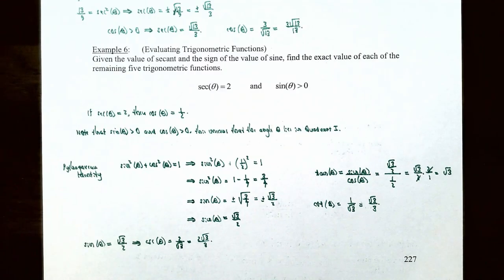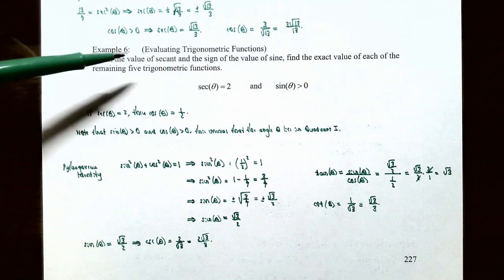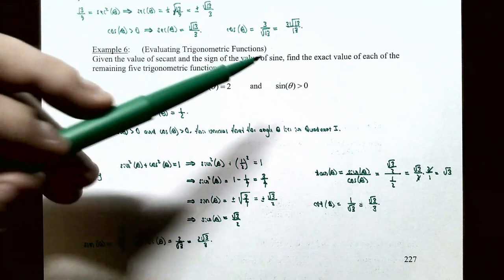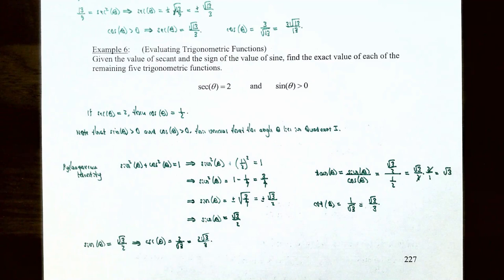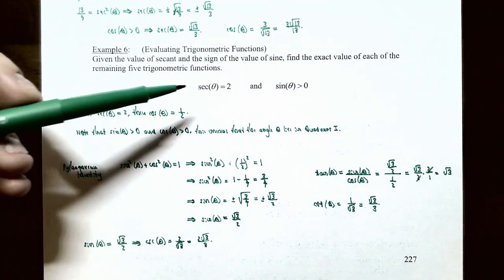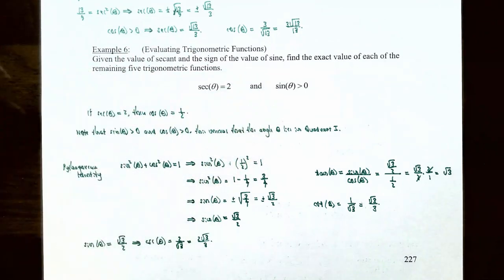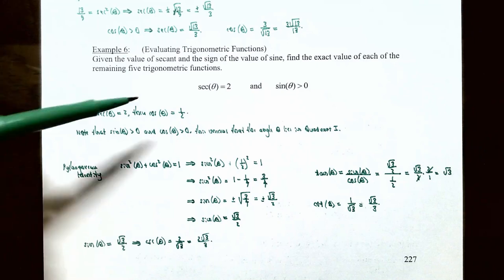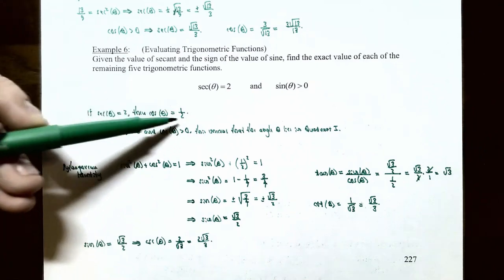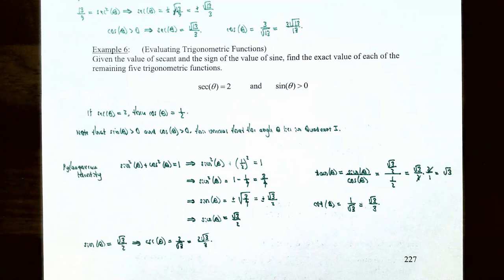In example six, let's evaluate trigonometric functions in a similar problem. Given the value of the secant function and the sign of the sine function, find the exact value of each remaining five trigonometric functions. This time we're given secant of theta equals 2 and sine of theta is positive. Since secant of theta equals 2, we automatically know that cosine, the reciprocal function, equals the reciprocal of 2, which is one-half. So cosine of theta equals one-half. We have four more trigonometric functions to find: sine, cosecant, cotangent, and tangent.